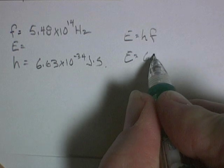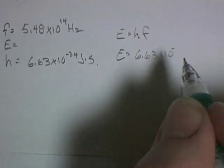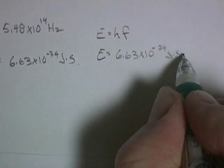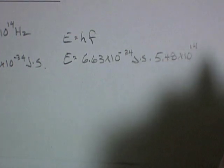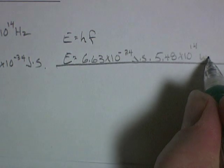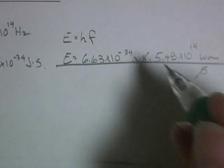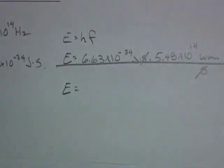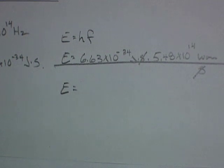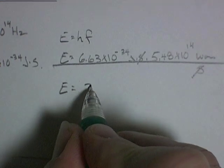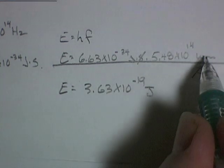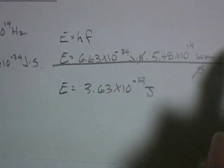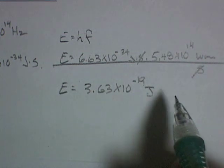Energy is equal to 6.63 times 10 to the negative 34 joule seconds, and we multiply it by our frequency, which is 5.48 times 10 to the 14. And the units of hertz really means waves per second. Seconds will cancel out, leaving us units of joules. And that's what they want, the answer in joules. So we need to find the calculator and plug in those numbers. And I'm getting 3.63 times 10 to the negative 19 joules.